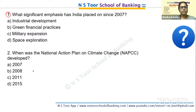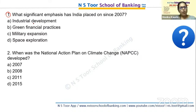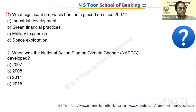Question 1: What significant emphasis has India placed on since 2007? Option A: Industrial development. Option B: Green financial practices. Option C: Military expansion. Option D: Space exploration. The answer is Option B — green financial practices.